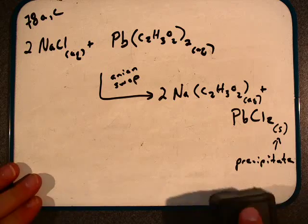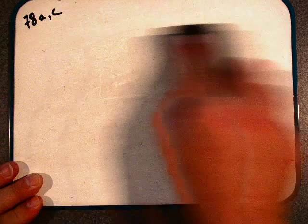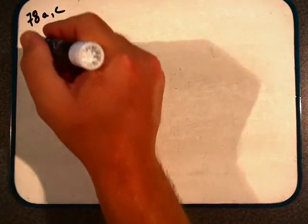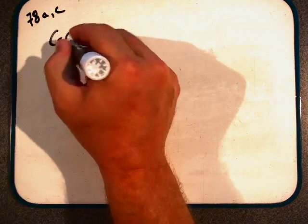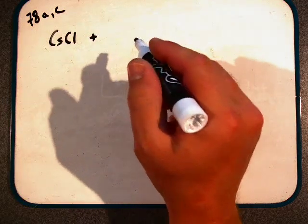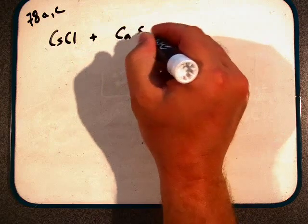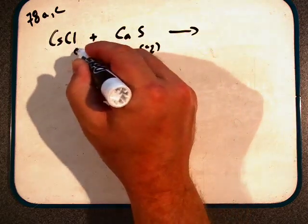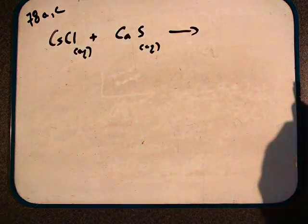That's part A. Let's look at part C. Part C looks at cesium chloride reacting with calcium sulfide. We're starting with aqueous solutions of both of those.